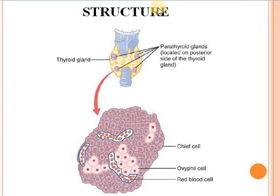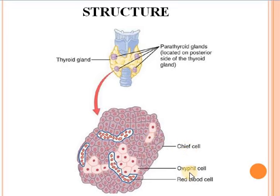Structure of parathyroid gland. The cells of the parathyroid gland are arranged in a compact mass, not in the form of follicles like in the case of the thyroid gland. It has two types of cells: chief cells and oxyphil cells.